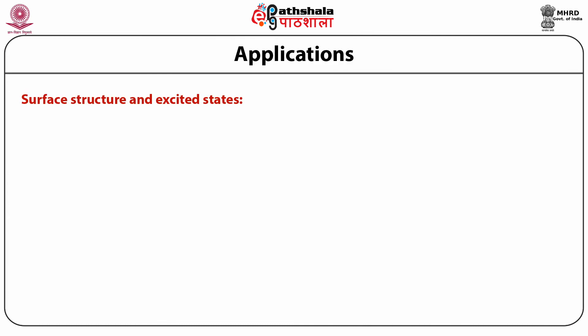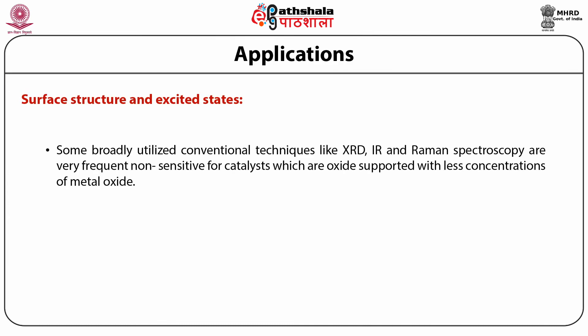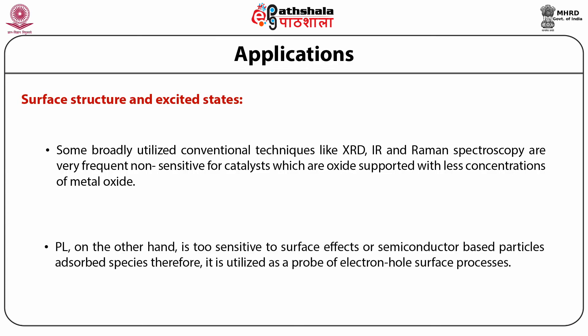Another application of interest is surface structure and excited states. Some broadly utilized conventional techniques like XRD, IR, and Raman spectroscopy are often non-sensitive for catalysts which are oxide-supported with low concentrations of metal oxide. Photoluminescence, on the other hand, is highly sensitive to surface effects or semiconductor-based particles and absorbed species. Therefore, it is utilized as a probe of electron-hole surface processes.